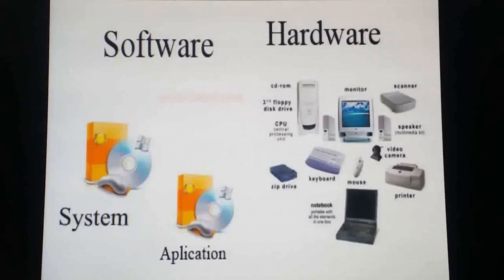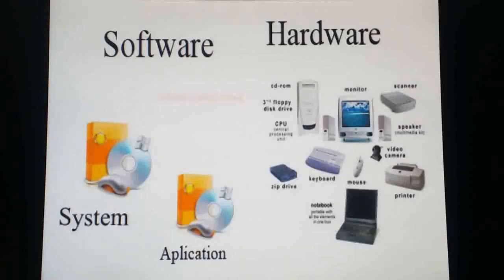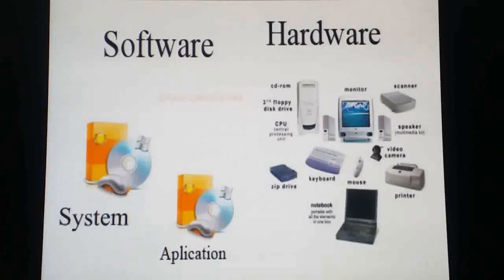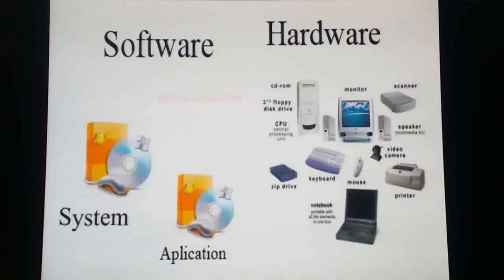There are two types of software: system software and application software. System software includes Windows, Linux, and Unix — versions like Windows 7, Windows 8, XP, Windows 10, Linux, Unix, and Ubuntu. These are called operating software. Application software includes Microsoft Word, Office package with Word, Excel, PowerPoint, Paintbrush, and other software.